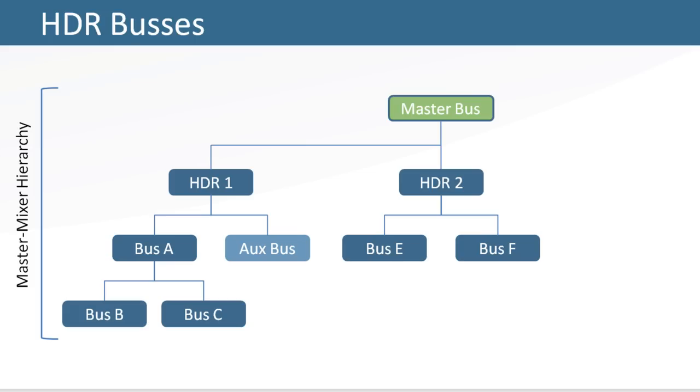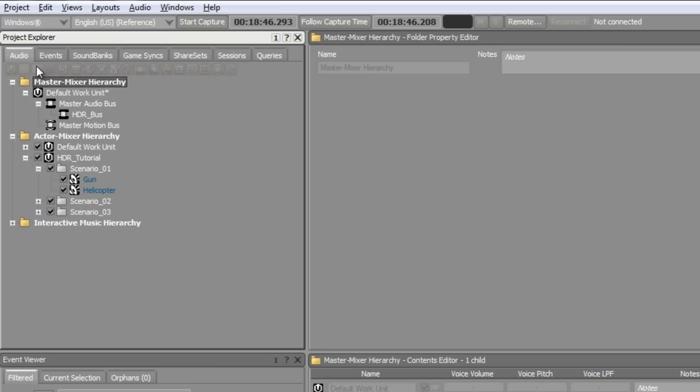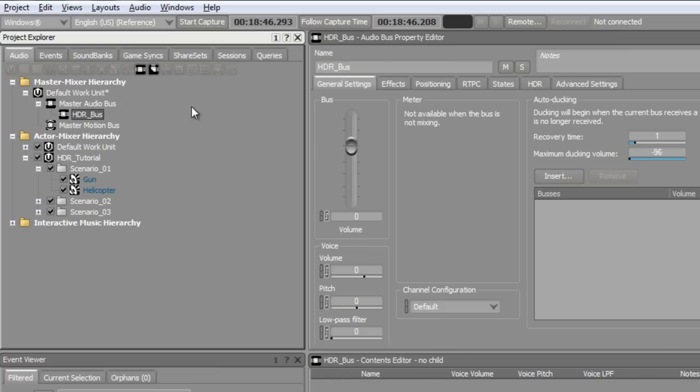It is possible to have parallel bus structures using HDR, but it is not possible to set HDR buses in series. To enable HDR on a bus, simply inspect the bus's HDR tab and select the Enable HDR checkbox.